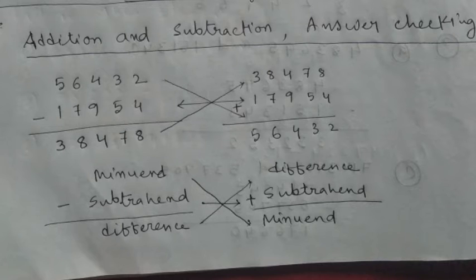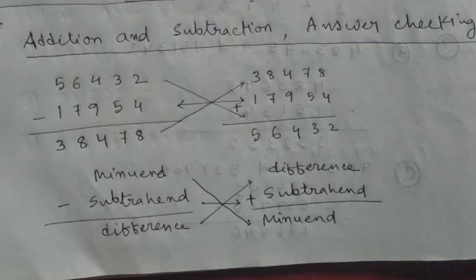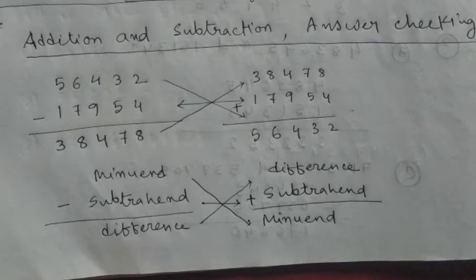How to check answers as correct or not for addition and subtraction. The first example is subtraction. For subtraction, see: 56,432 minus 17,954 is equal to 38,478. That is the answer. So how do we check the answer?